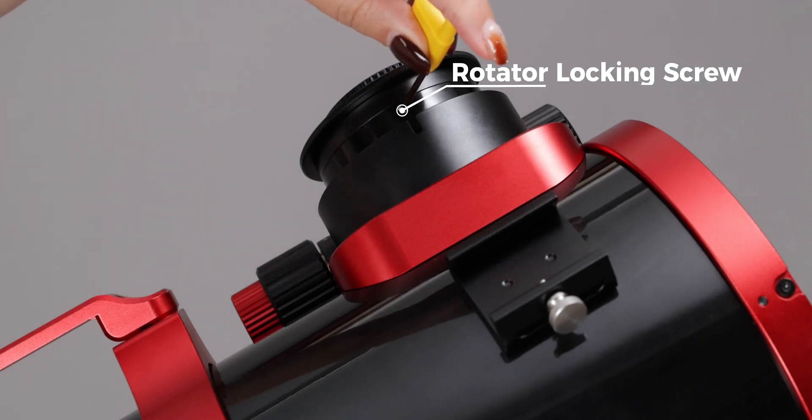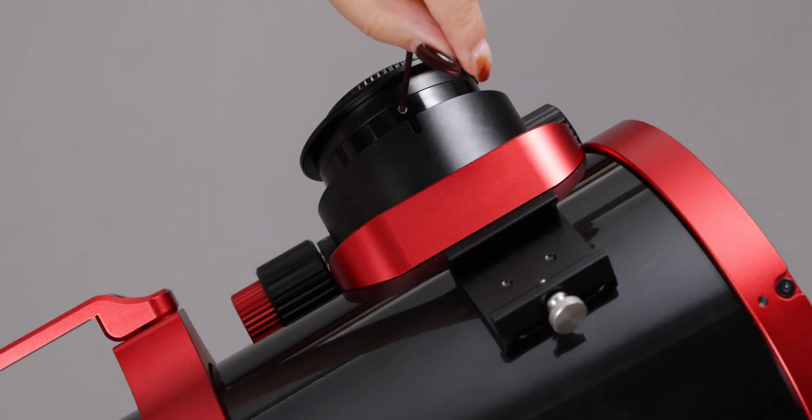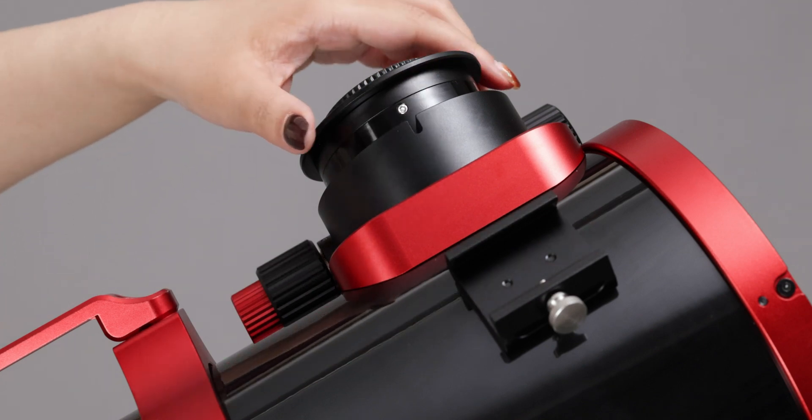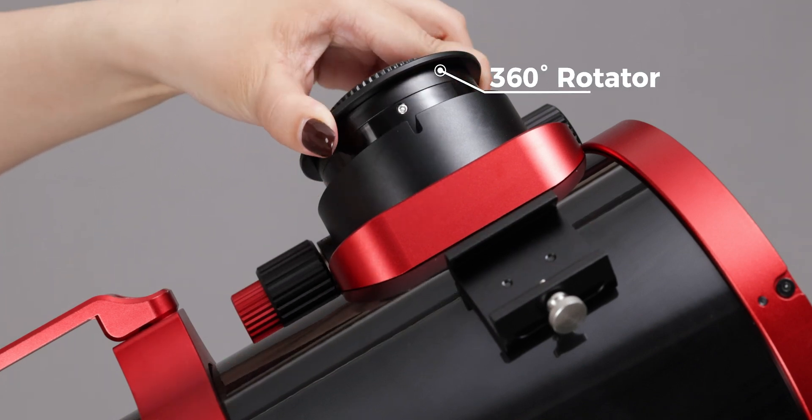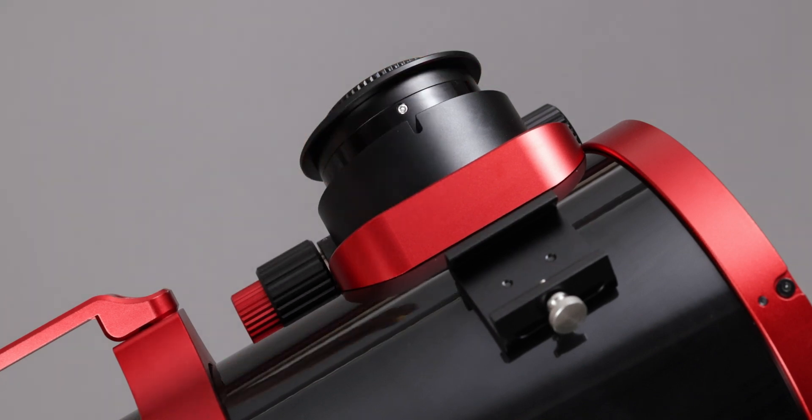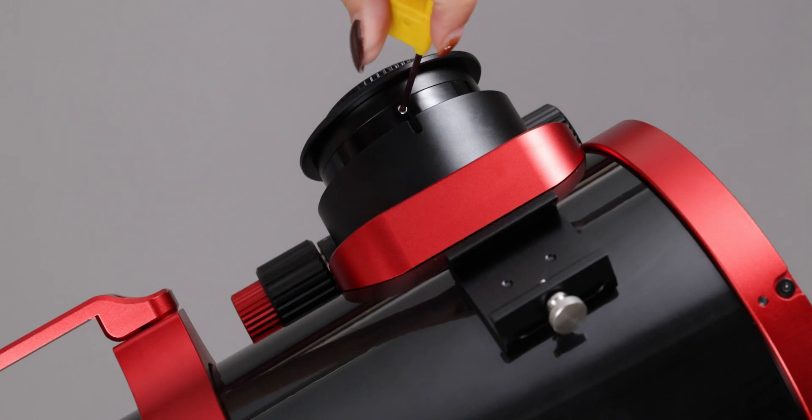It is the 360 degrees rotator. Unscrew the rotator locking screw to use it. Here we use the T8 wrench to tighten the rotator screw.